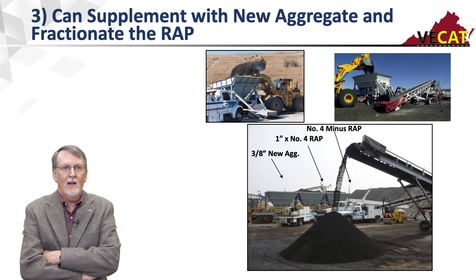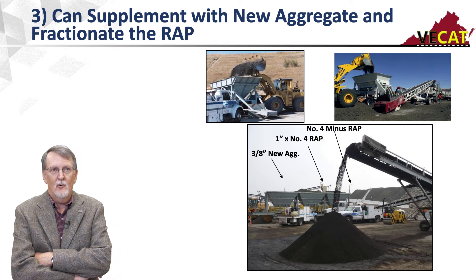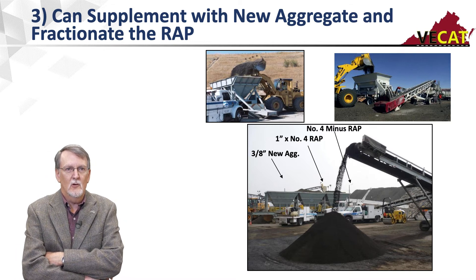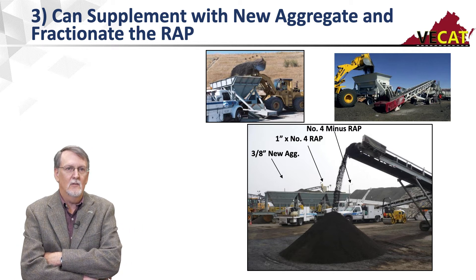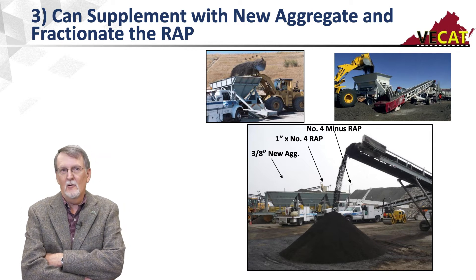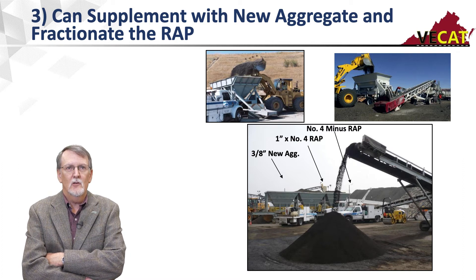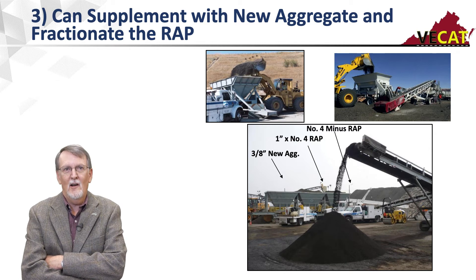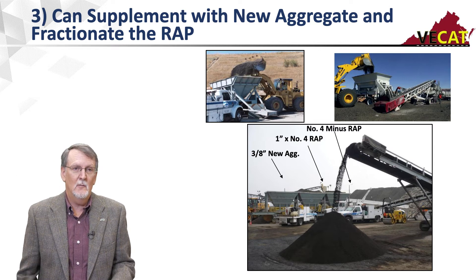The nice thing about cold central plant is you can easily supplement it with other materials — new aggregate to improve the gradation, or you can fractionate the RAP for better control. For example, one setup had three bins: minus number-four RAP, one-inch to number-four RAP, and three-eighths-inch new aggregate, all being fed into a pug mill. You can also add additives such as lime, making it a very versatile mix.